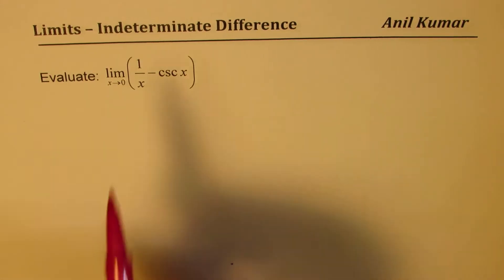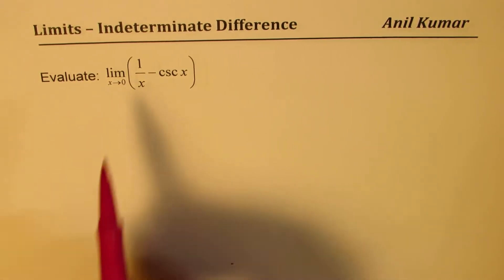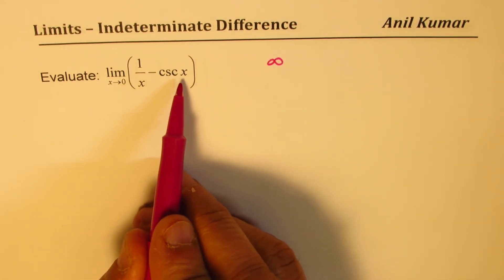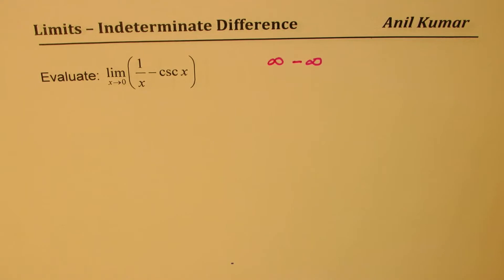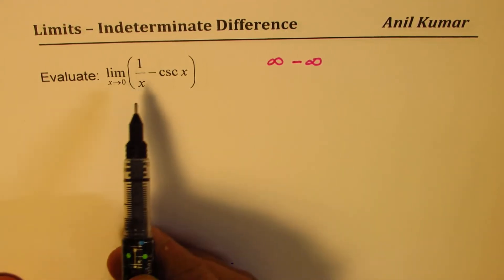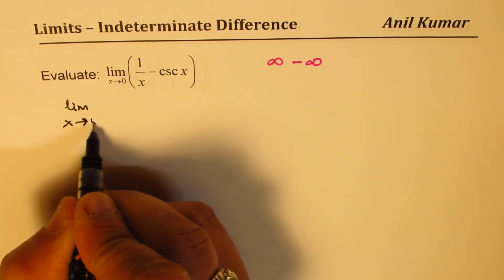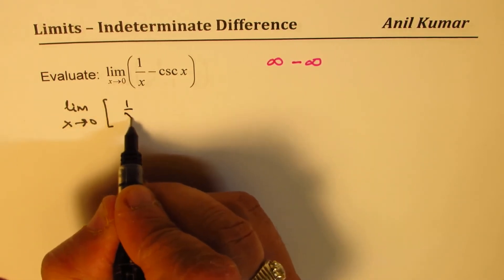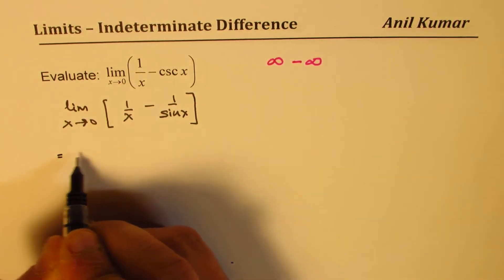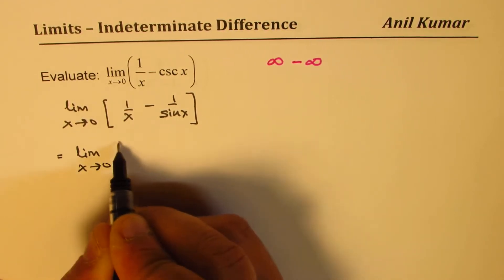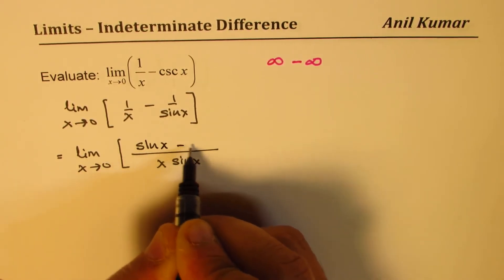We need to evaluate the limit as x approaches 0 of 1/x minus csc x. If we substitute 0, we get infinity from 1/x and also infinity from csc x, with a negative in between — so it is an indeterminate difference. To solve this we write it as a ratio: we rewrite csc x as 1/sin x and take a common denominator, giving (sin x minus x) over (x times sin x).